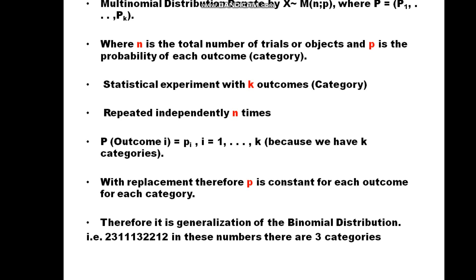Let's take a very simple example. If we have the values 2, 3, 1, 1, 1, 3, 2, 2, 1 — if we count category 1, it has 1, 2, 3, 4 objects. Category 2, which is P2, has 1, 2, 3 objects, and so on.